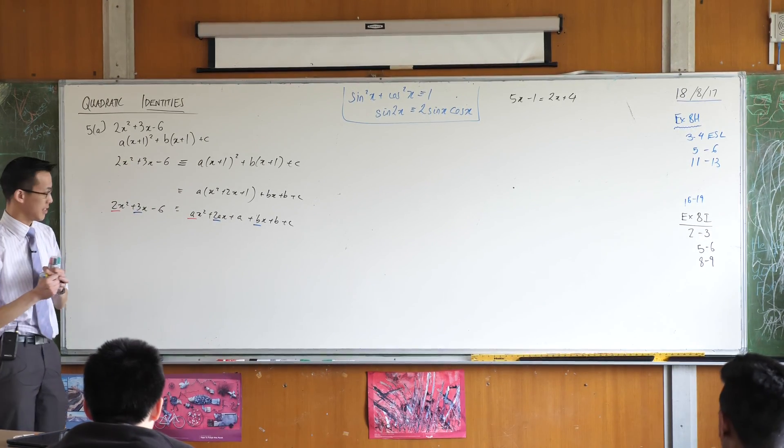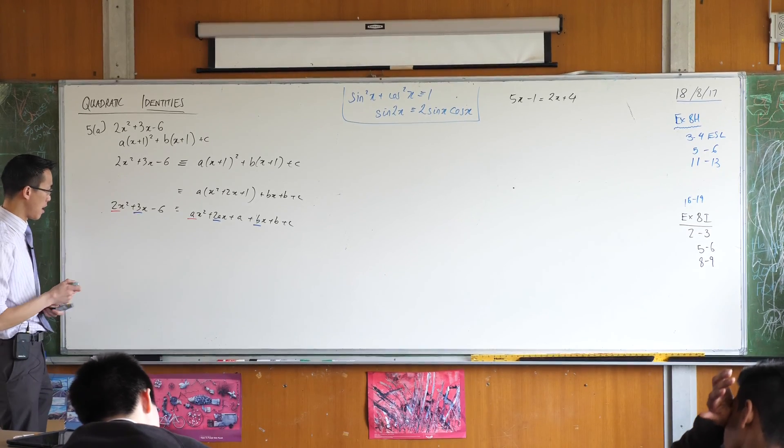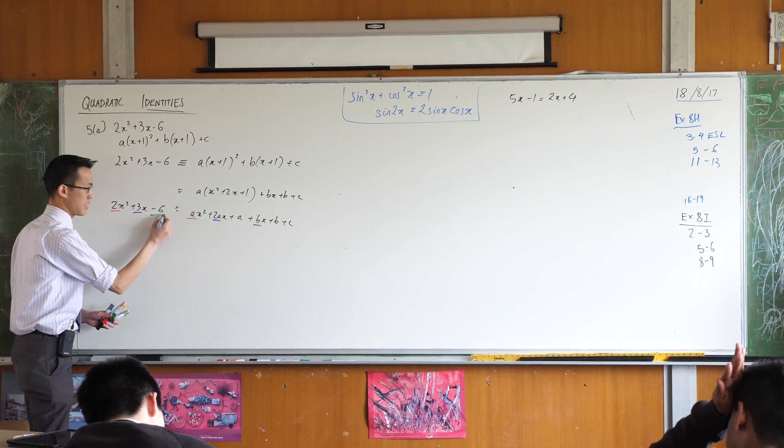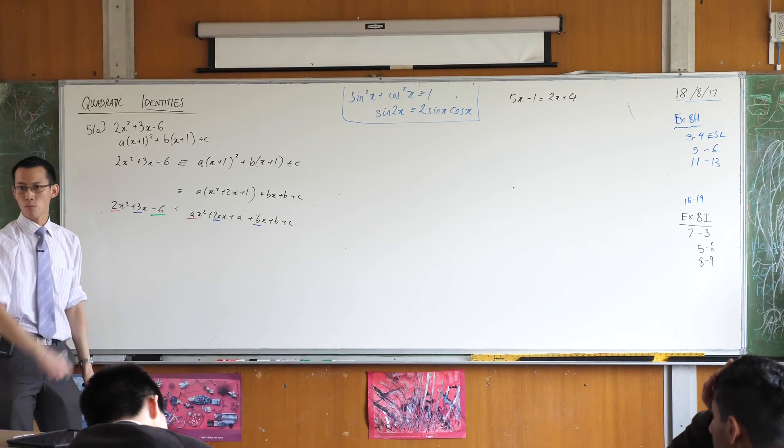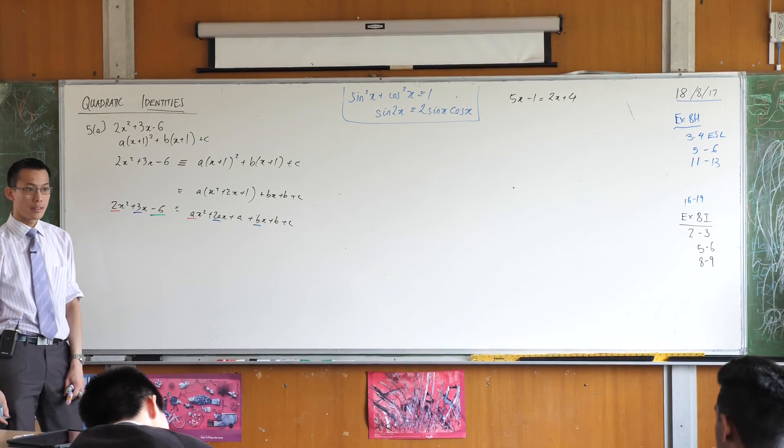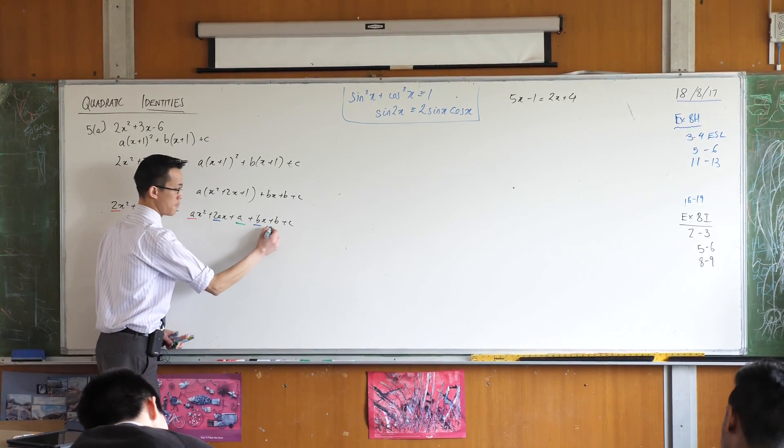And then lastly, have a look at the constant terms. So with no x's here you've got a negative six. Have a look on the right. What's left behind? A plus B plus C. There you go.